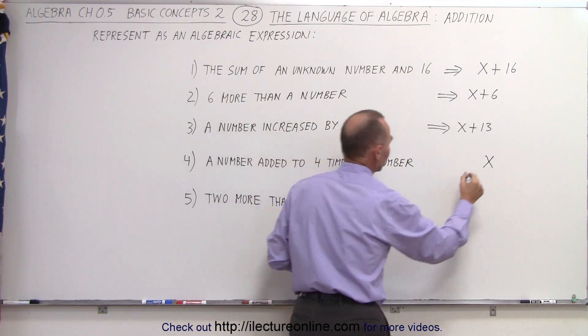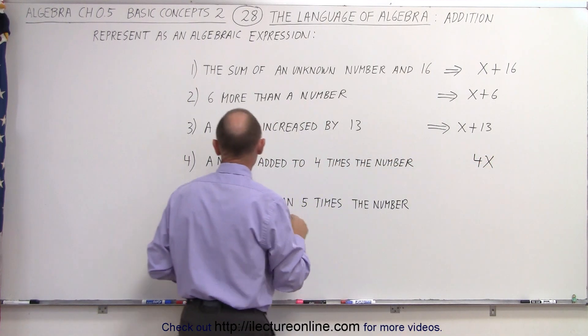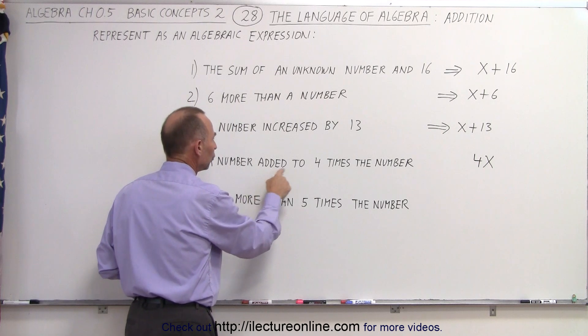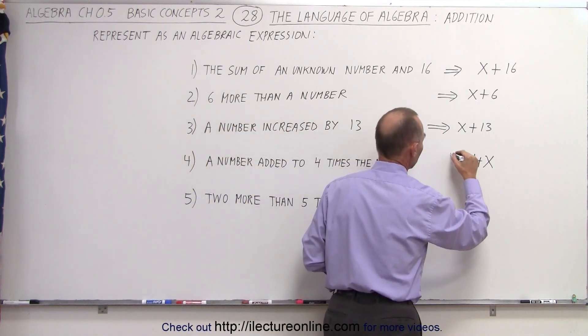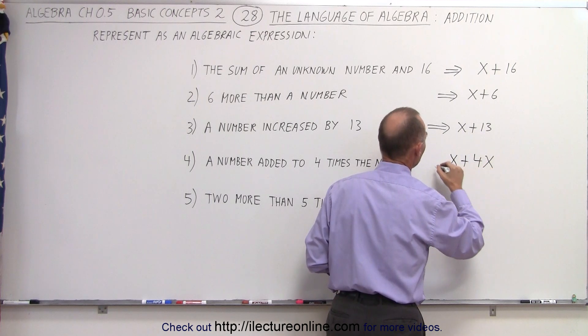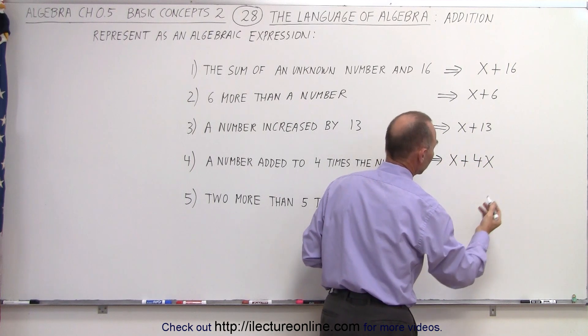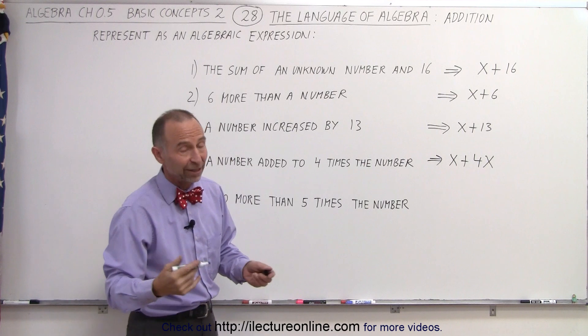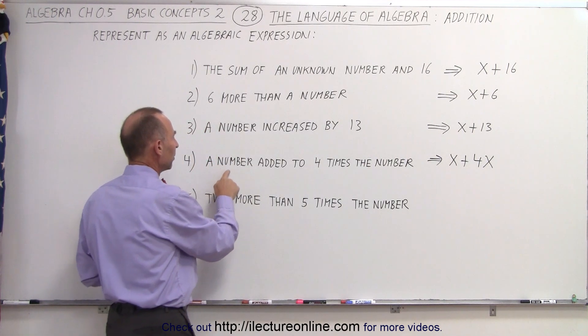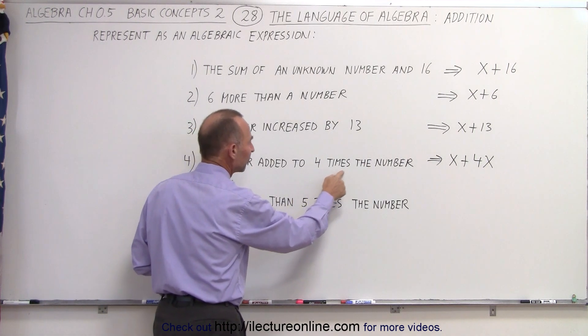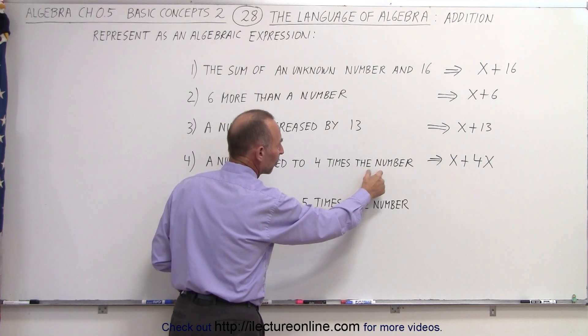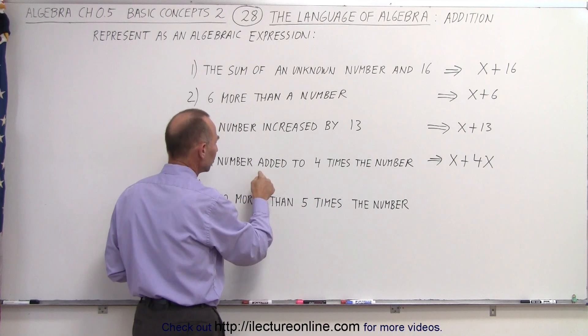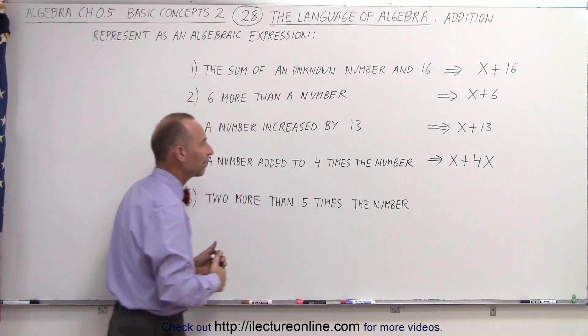We want four times that number, which is 4x, and now we read a number added to four times the number, so we need to add the number to it, so it would be x plus 4x, and that would be the proper expression. Of course, x plus 4x is equal to 5x. So here again, we take a number and we add it to four times the number, applying the same number, so four times the unknown number is 4x, add the number to that, that's x plus 4 times the number.